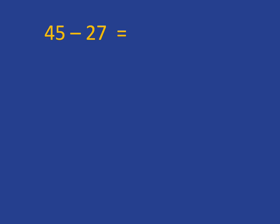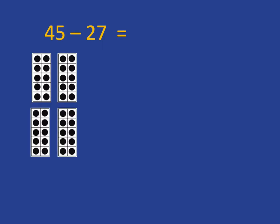If we want to do a calculation like 45 subtract 27, this is a bit more of a complicated subtraction, so let's go back to working with our concrete material. So we need to lay out 45, which we know is four tens and five ones. We now need to take away 27, so we need to take away two tens and seven ones. Let's start with the ones, and we need to take away seven ones, but there are only five ones there, so we can't take away seven ones.